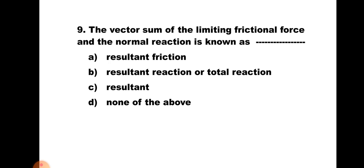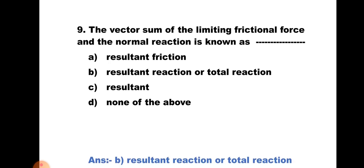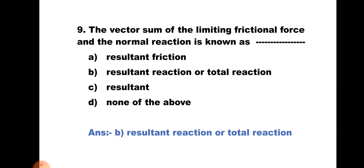Question number nine: The vector sum of limiting frictional force and the normal reaction is known as — a) Resultant friction, b) Resultant reaction or total reaction, c) Resultant, and d) None of the above. Limiting frictional force and normal reaction are perpendicular to each other. Their resultant is √(F² + R²), and this is known as resultant reaction or total reaction. Hence the correct answer is b) Resultant reaction or total reaction.